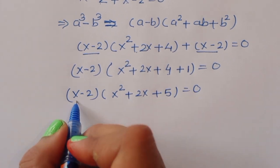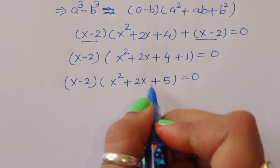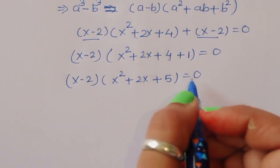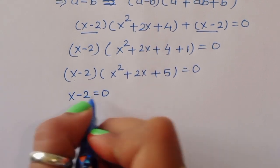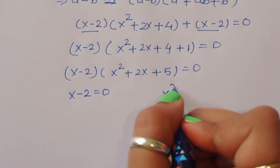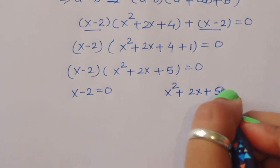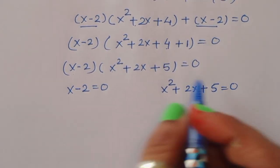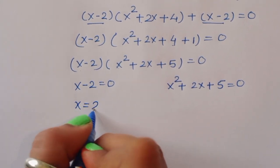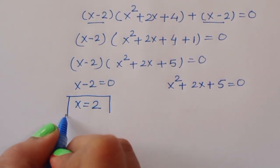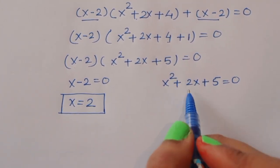Now x minus 2 times x squared plus 2x plus 5 equals 0 gives us two equations. From the first: x minus 2 is equal to 0, so x is equal to 2. This is the first value of x.